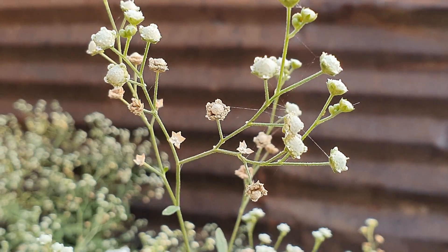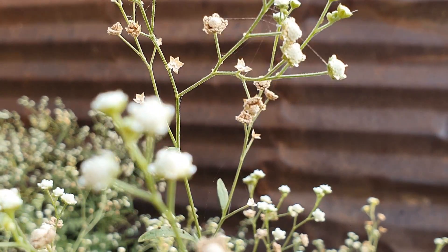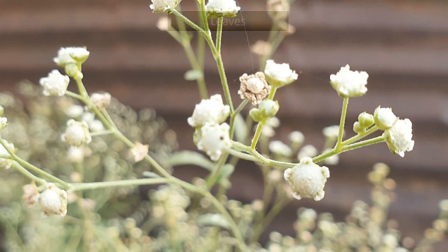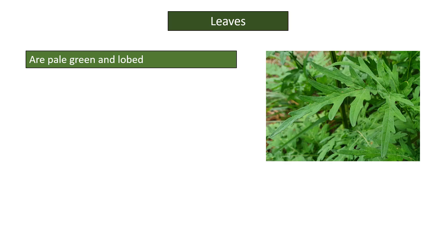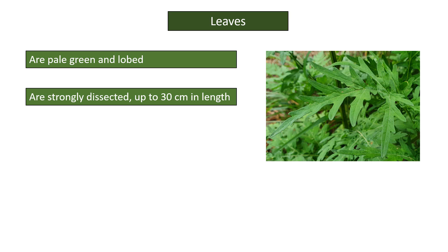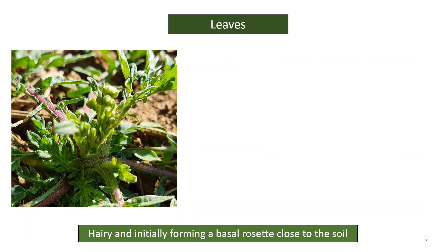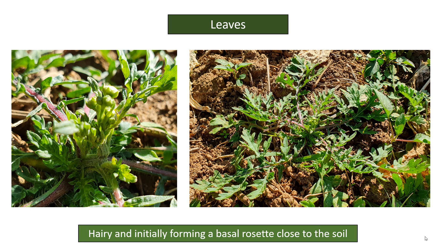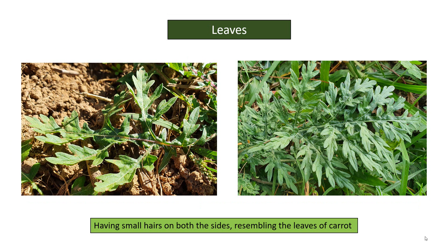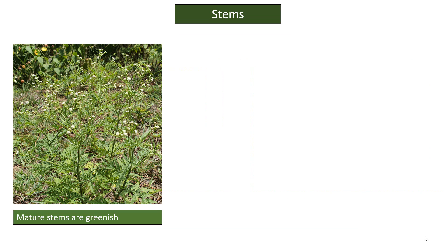Parthenium hysterophorus is an erect, much-branched, vigorous, aromatic annual herbaceous plant with a deep taproot. Leaves are pale green and lobed, strongly dissected, and up to 30 centimeters in length. They are alternate, sessile, irregularly dissected, and bipinnate. Leaves are hairy, initially forming a basal rosette close to the soil, with small hairs on both sides, resembling the leaves of carrot. Mature stems are greenish and become much branched at maturity.